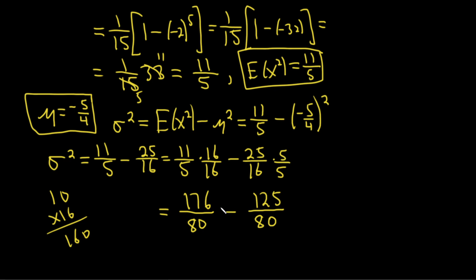Subtracting the numerators, 176 minus 125 gives us 151 over 80. That's σ squared, the variance.